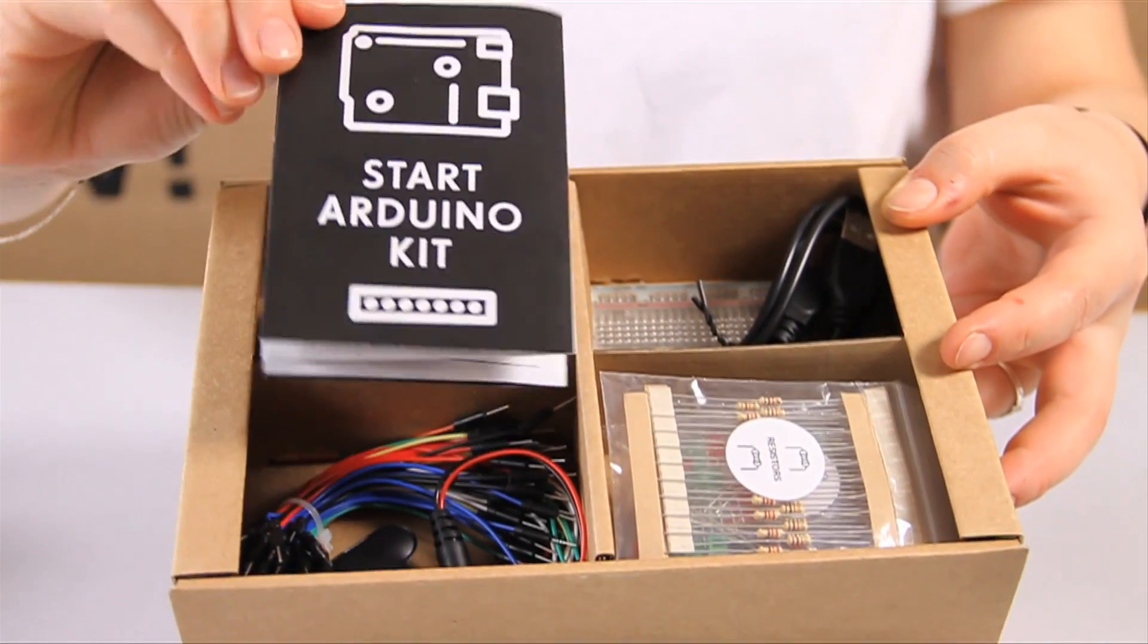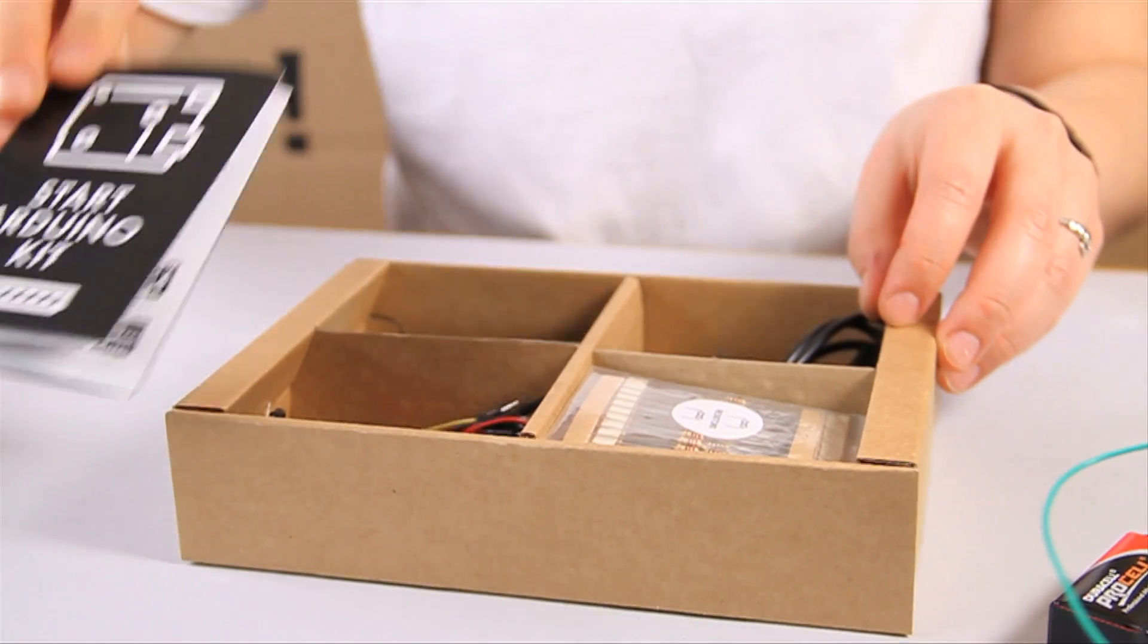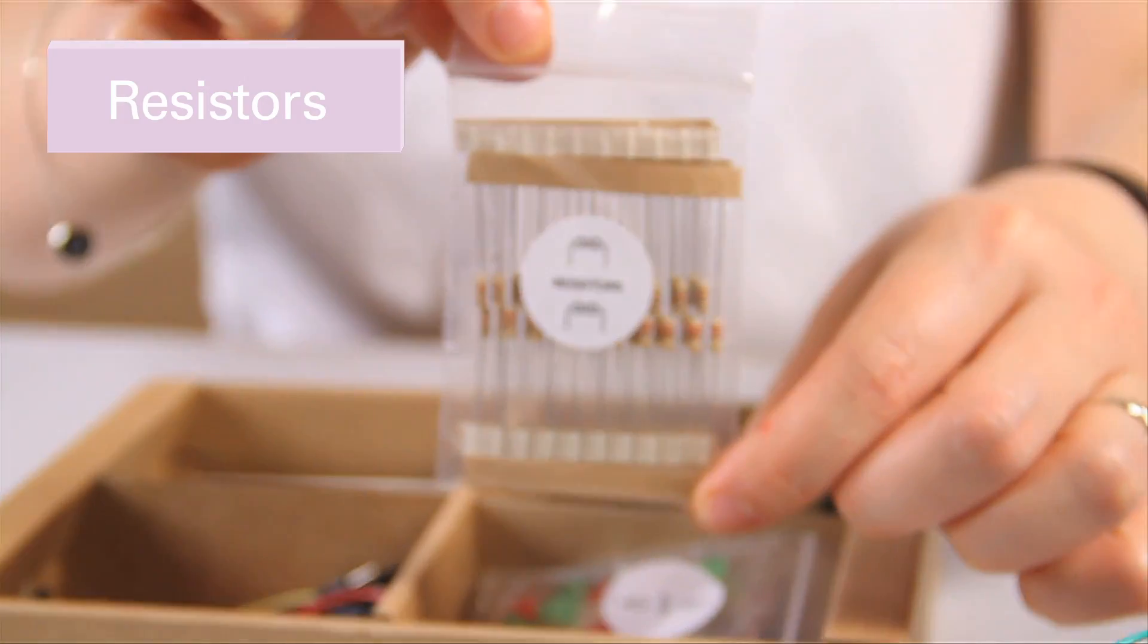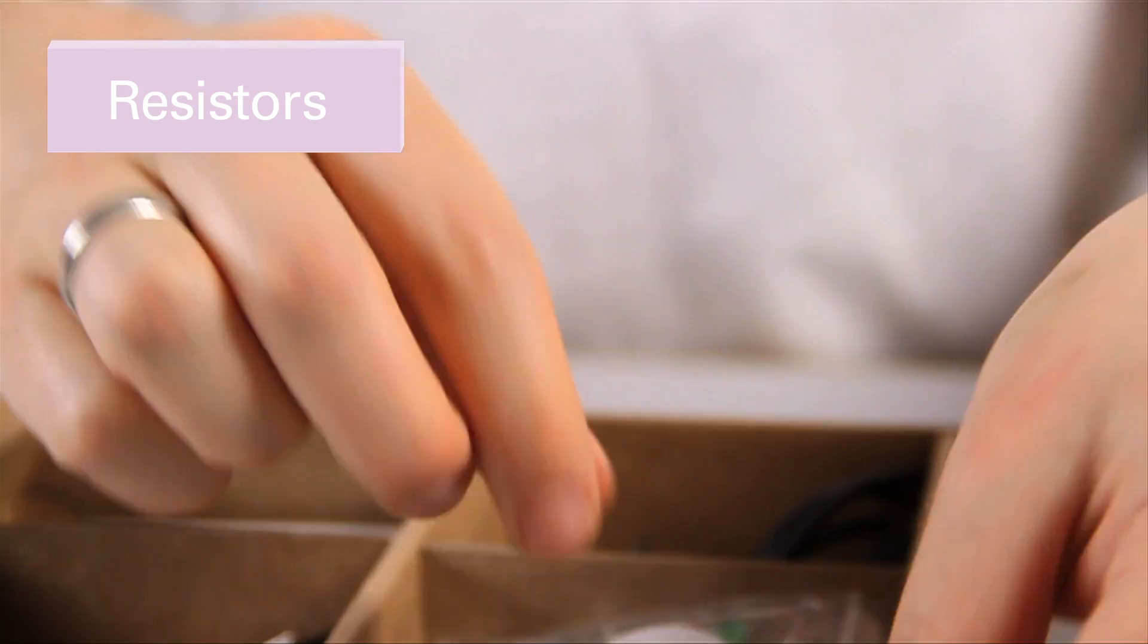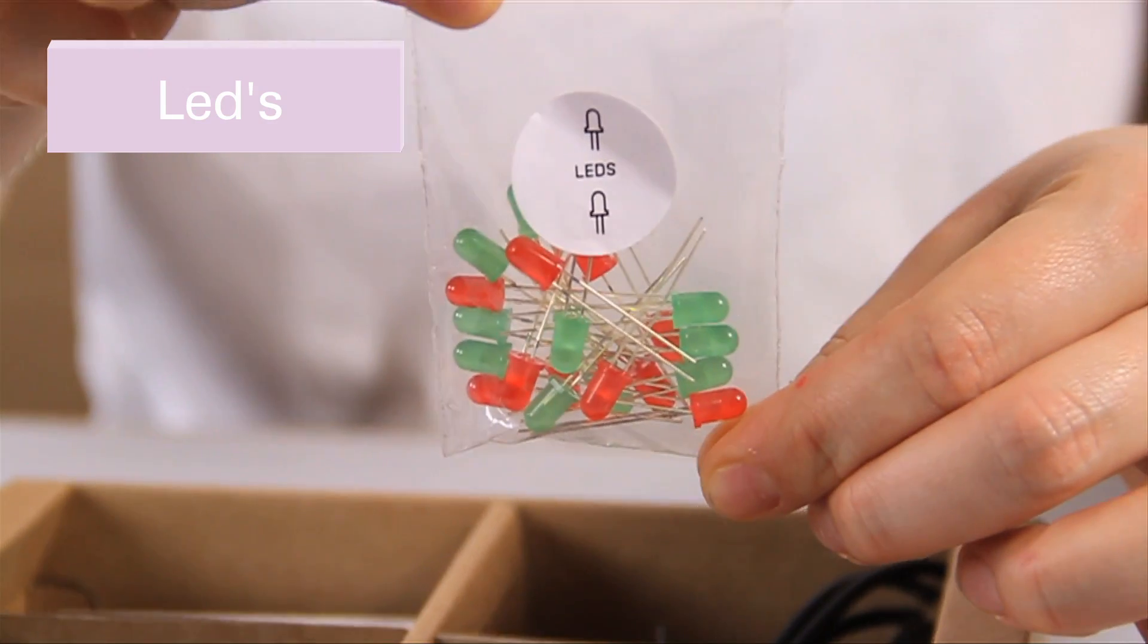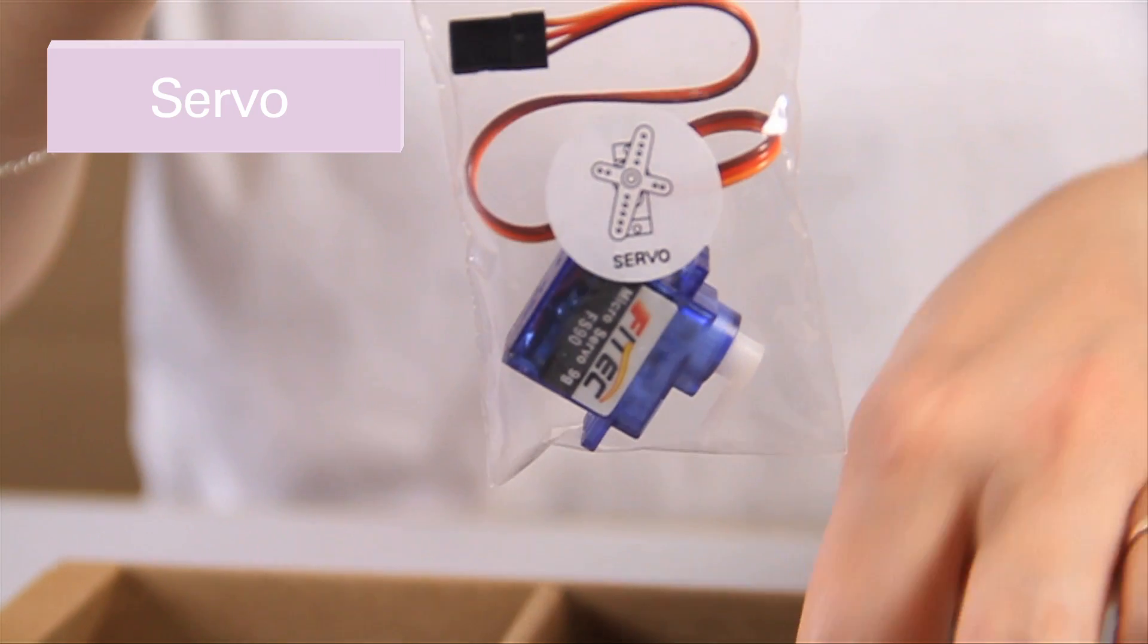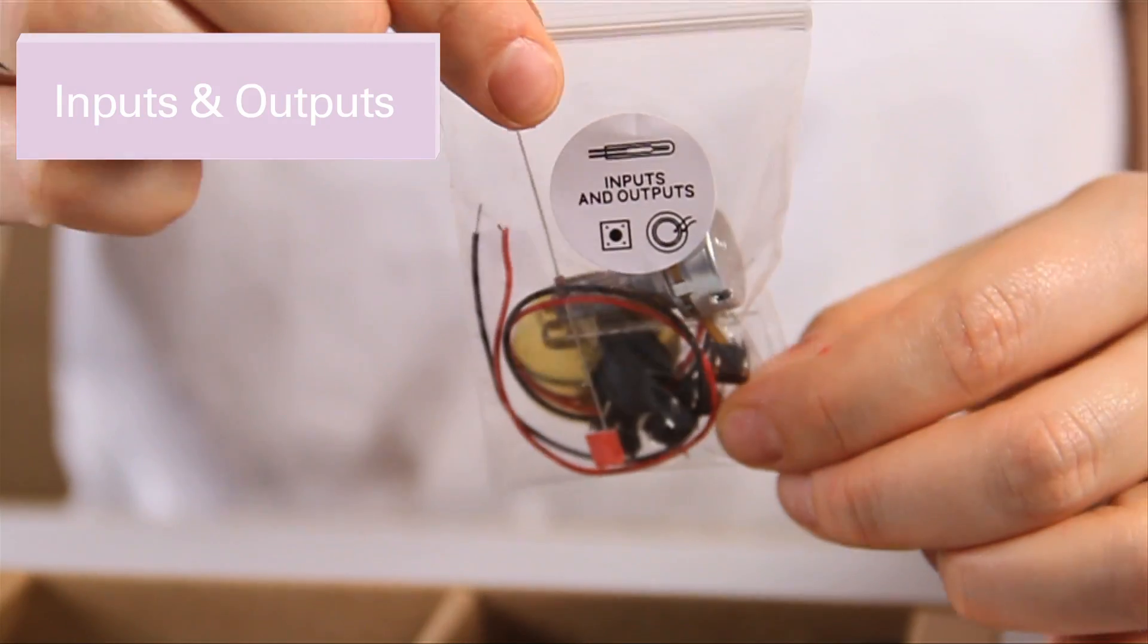You get your Arduino Start kit insert which gives you an introduction to everything. Then you have your components split into different categories. One of the categories is resistors. One of them is LEDs, ten of each green and red. Another category is servo and its little add-ons. And the last category is inputs and outputs.